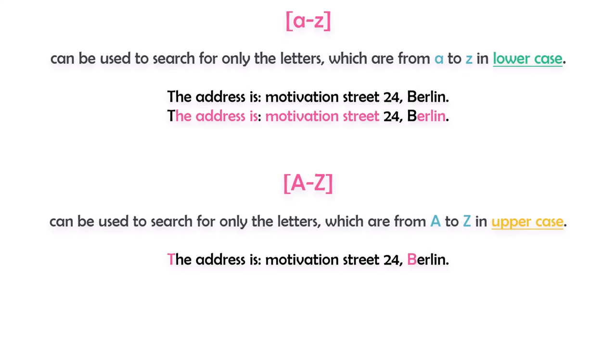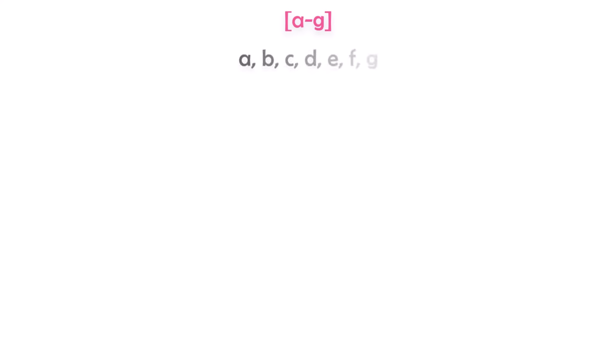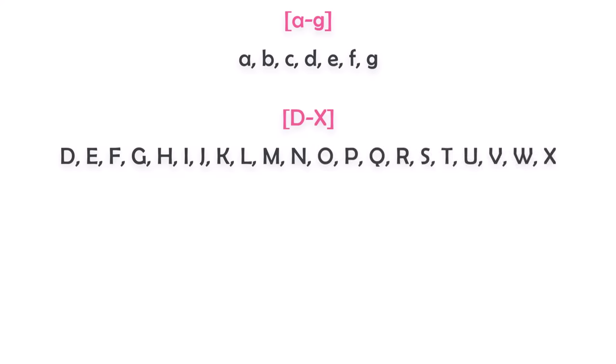In summary, [a-z] will match any lowercase letter from A to Z, and [A-Z] will match any uppercase letter from A to Z. We can also use a sub-range like [a-g] to get only lowercase letters between A and G, or [D-X] for uppercase letters between D and X. To search for both lowercase and uppercase we can combine them in one pattern, like [a-zA-Z], and these two combined patterns are exactly the same.